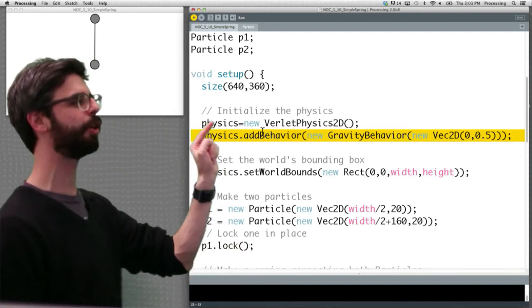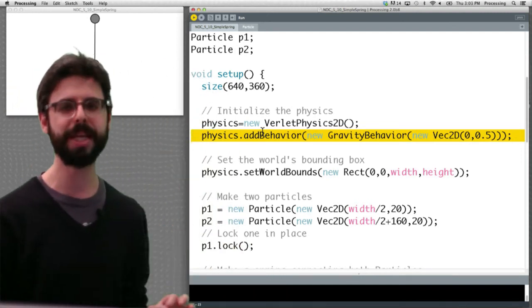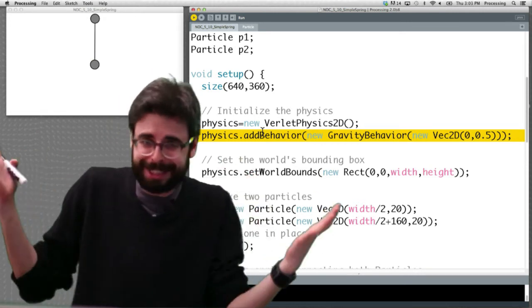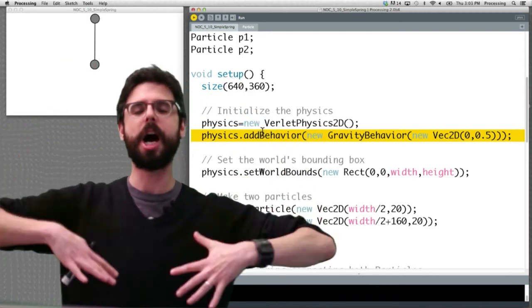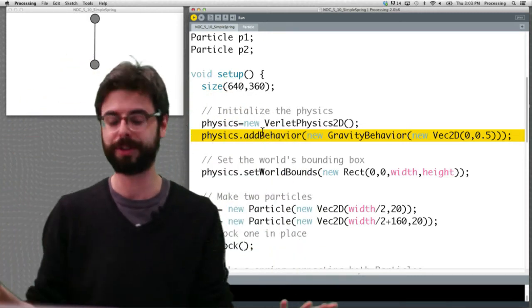this is a little bit of an odd line of code which will make sense a bit more to us later when we look at behaviors. But the world has a gravity behavior in it. Meaning, you know, gravity doesn't just exist out of nowhere,